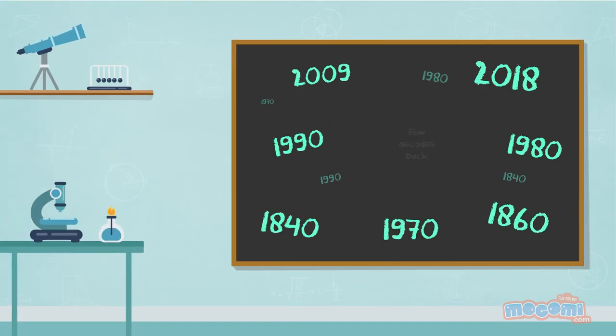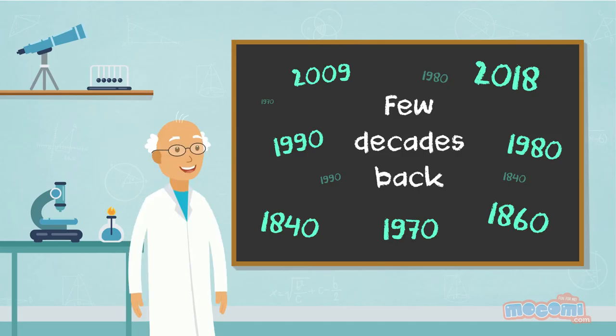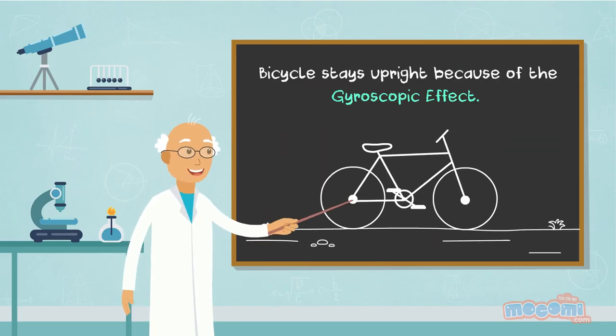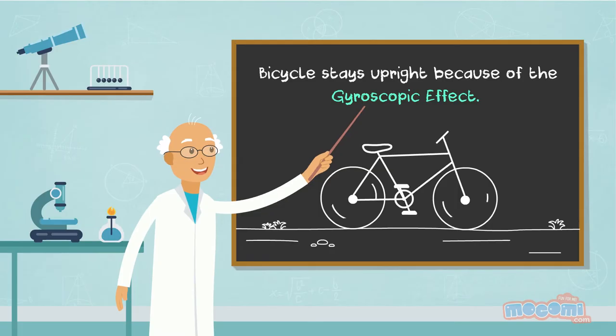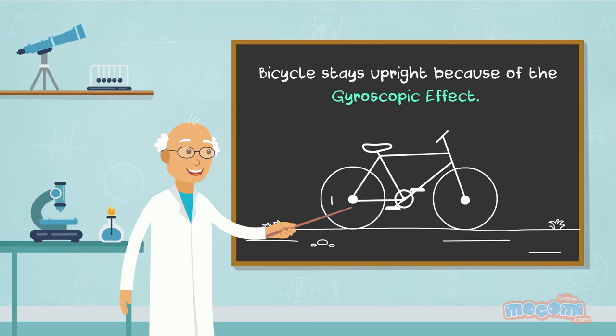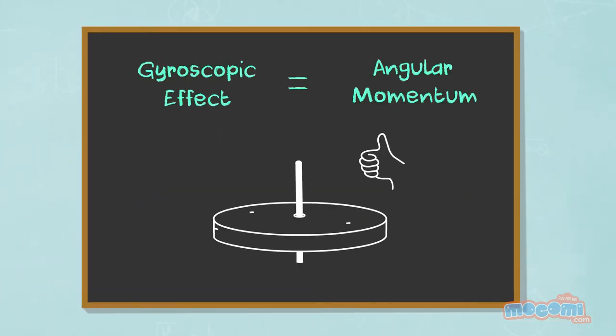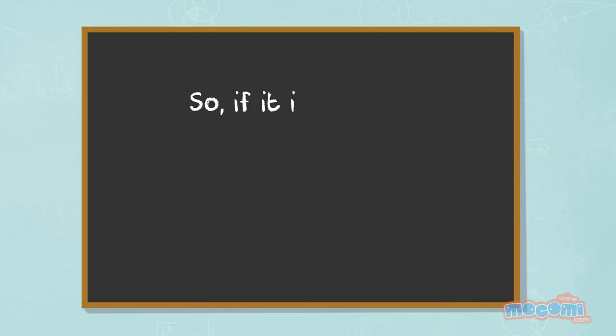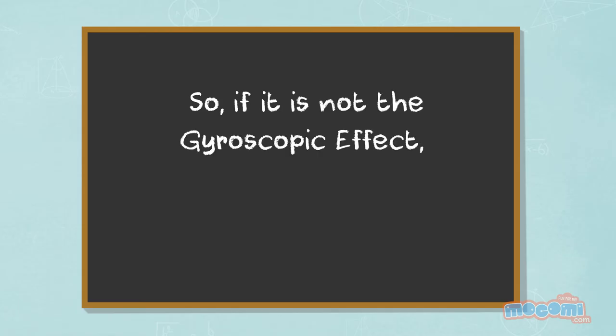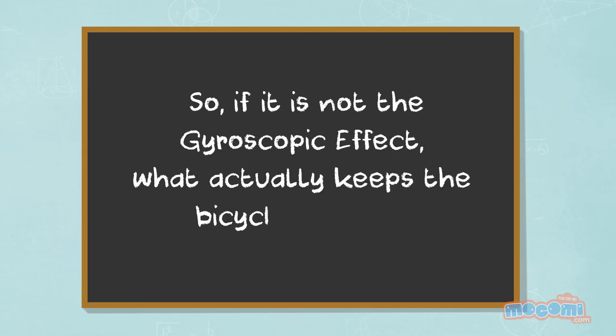Did you know that till a few decades back scientists thought a bicycle stays upright because of the gyroscopic effect? The gyroscopic effect means that a spinning wheel tends to stay aligned in its original direction during momentum. This is known as angular momentum or spinning action. So, if it is not the gyroscopic effect what actually keeps the bicycle upright?